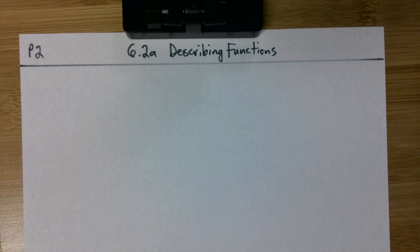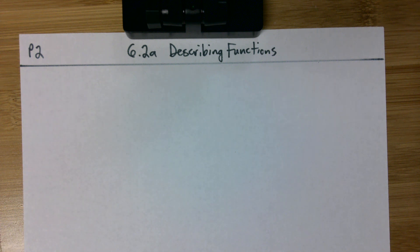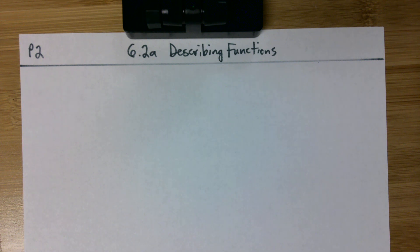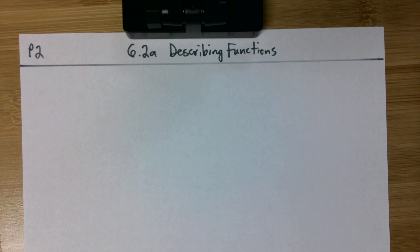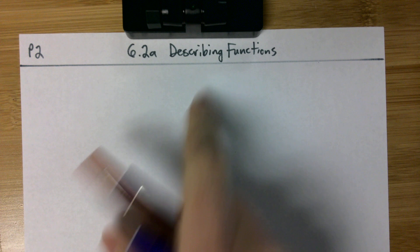Today we're going to be talking about how we're going to describe functions. Yesterday's lesson was titled identifying functions, so first we have to figure out what a function is and what a function isn't. In yesterday's notes we looked for repeating x values, or repeating inputs with different y values. If we had a graph, we looked for two points that were directly above each other and vertically in line with each other. So today we're going to be describing them.